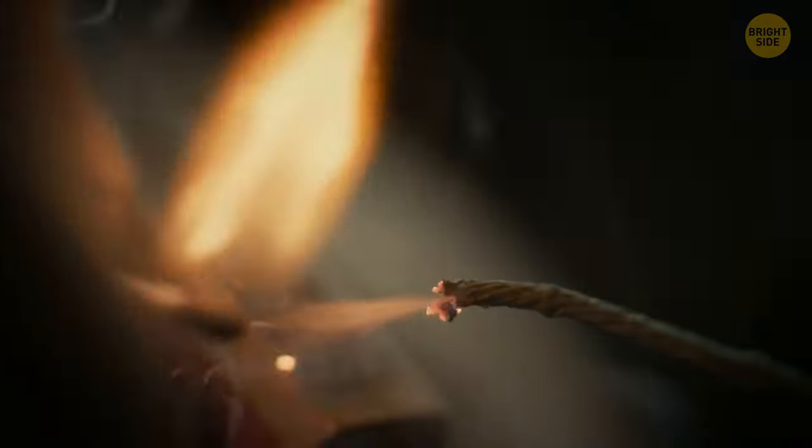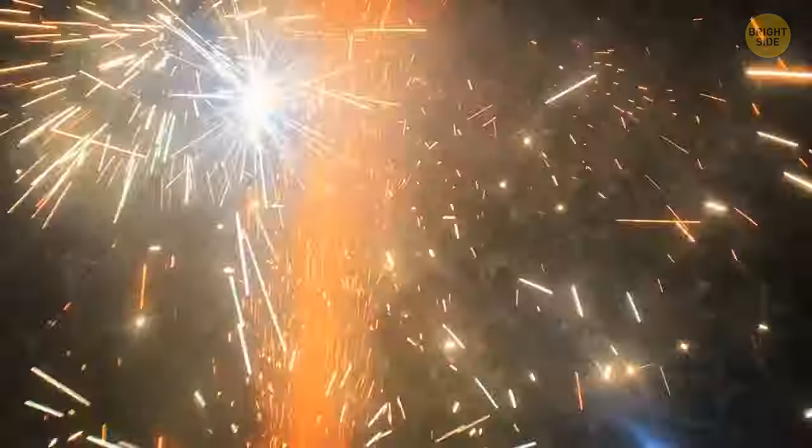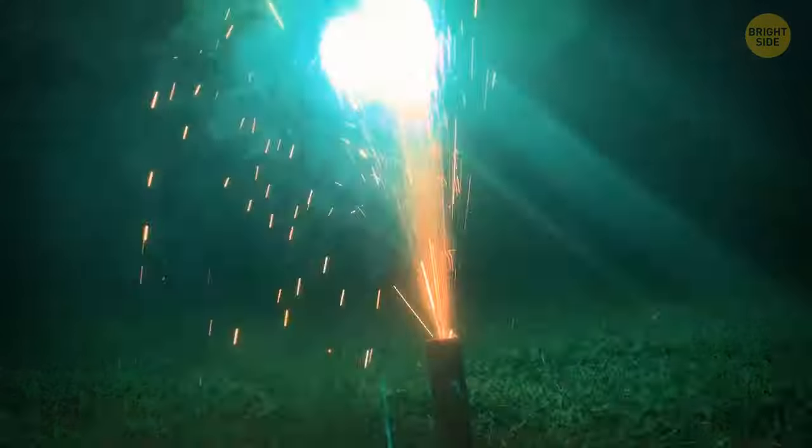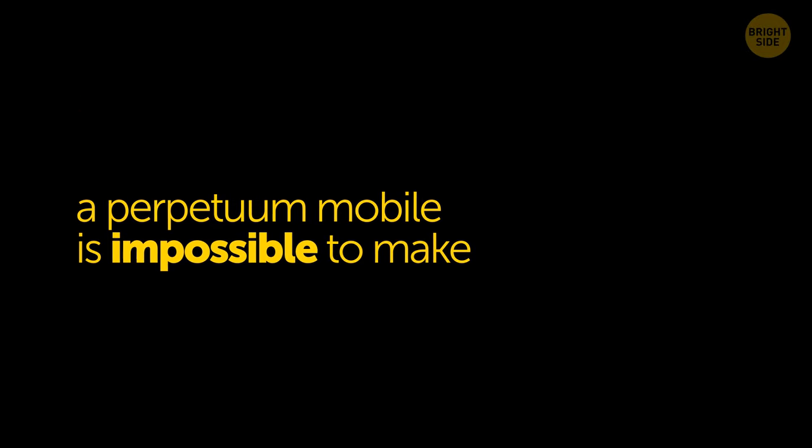This is the second law of thermodynamics. It reveals that every time energy is transferred or transformed, more and more of it is lost. That's why every attempt at constructing a perpetuum mobile is flawed from the very start. In one word, a perpetuum mobile is impossible to make.